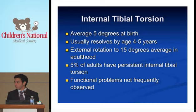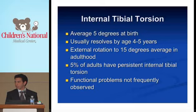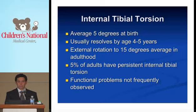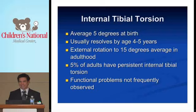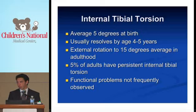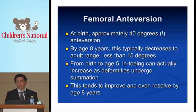Internal tibial torsion: the average is actually five degrees internal at birth, although there can be significant variation. This usually resolves by age four or five years. External rotation in adulthood averages 15 degrees external. Five percent of adults have residual internal tibial torsion, so that's a huge range — five degrees internal to about 20 to 25 degrees external is still within two standard deviations. Functional problems are not frequently observed. When a child reaches early adolescence and adulthood, in-toeing is frequently not a functional problem, rather a cosmetic one. This is sometimes the hardest thing to convince parents is in fact normal.